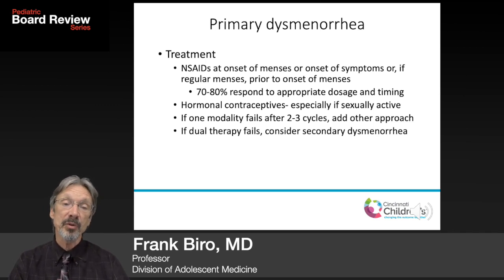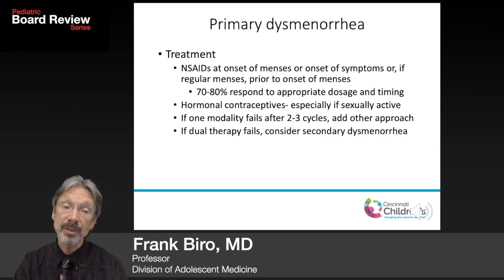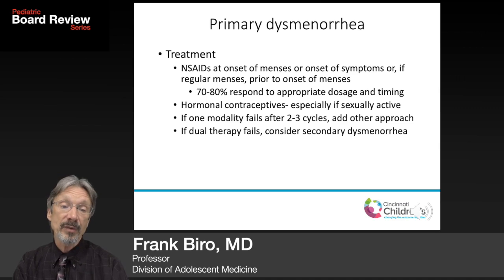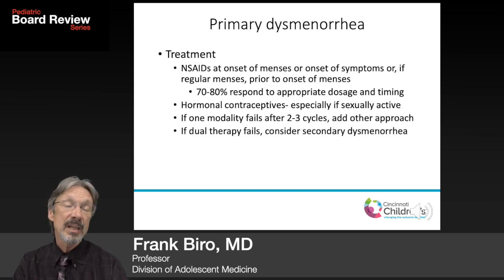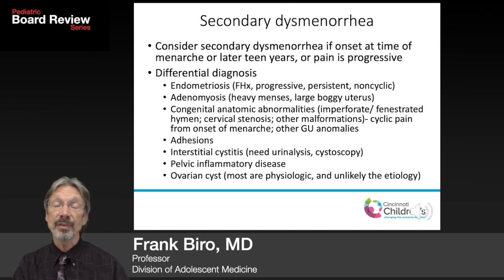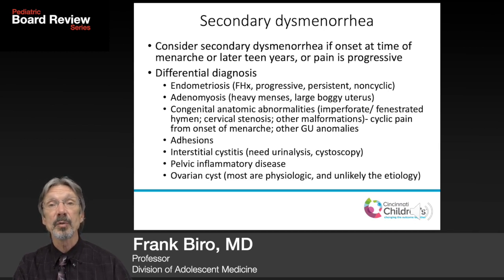70 to 80% of patients will respond to appropriate dosage and timing. If they're sexually active, you can consider hormonal contraceptives, which are also effective. I typically start with NSAIDs first, then add the other modality after a couple of cycles if there's no improvement. If dual therapy fails, then consider secondary dysmenorrhea — especially if pain starts at menarche, in the late teen years, is progressive, or doesn't respond to appropriate therapy.